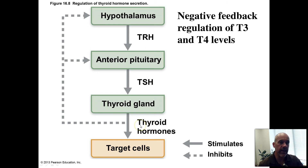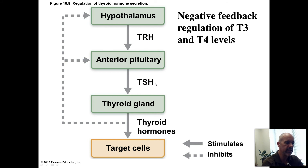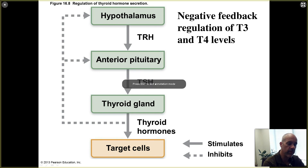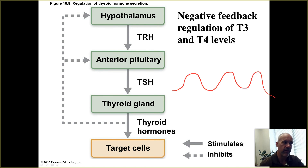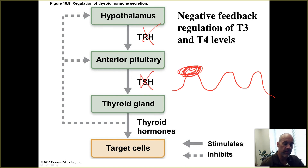Here you can see the negative feedback regulation. Once you have increasing levels of T3 and T4, the hypothalamus and the anterior pituitary can sense that and decrease production of TRH and TSH. We want our T3 and T4 levels to stay within a normal homeostatic range, so if T3 and T4 are elevated, you need less TRH and TSH.